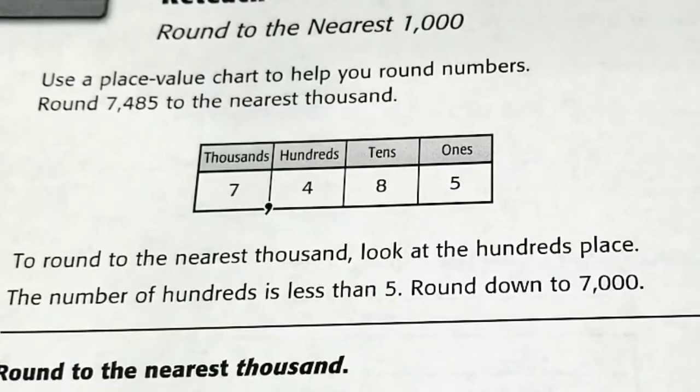Use a place value chart to help you round numbers. Round 7,485 to the nearest thousands.